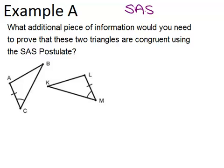In example A it says what additional piece of information would you need to prove that these two triangles are congruent using the SAS postulate.